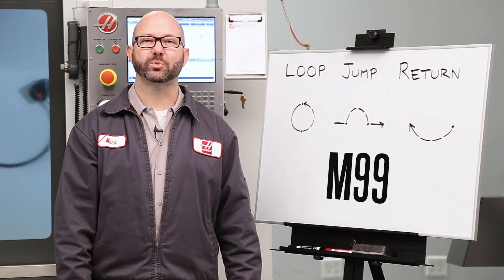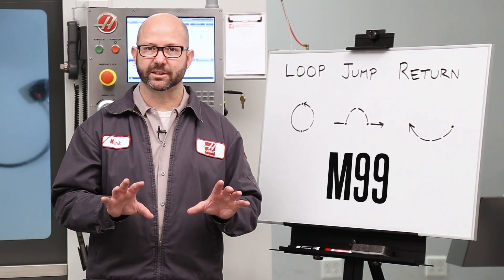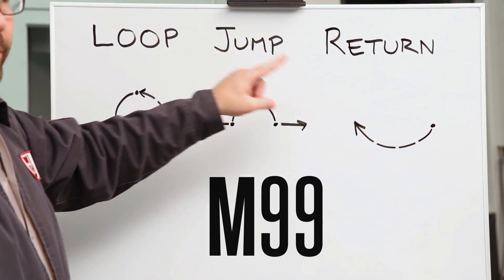An M99 is three different codes on a Haas machine carrying several different functions in its bag of tricks. This one M code can loop, jump, or return.